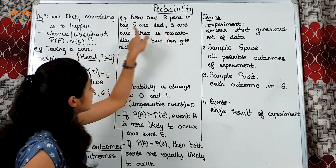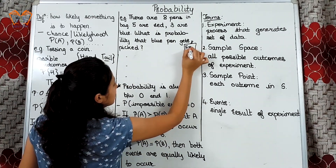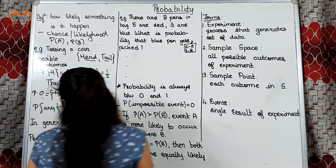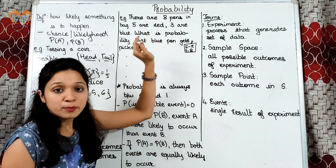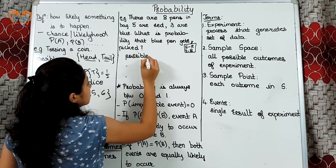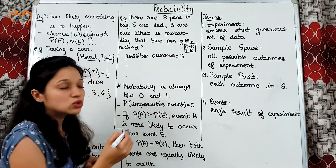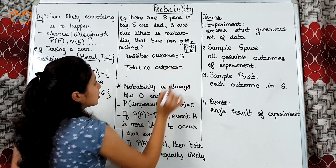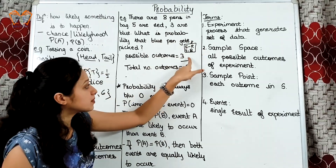Next example: there are 8 pens in a bag — 5 are red, 3 are blue. What is the probability that a blue pen gets picked up? Number of desirable outcomes: we want a blue pen to be picked up and there are total 3 blue pens. So, desirable outcomes are 3. And the total number of outcomes are 5 plus 3, that is 8. So, probability of a blue pen getting picked up is 3 by 8.